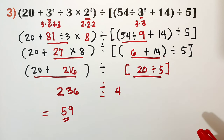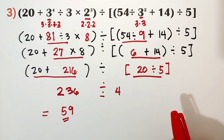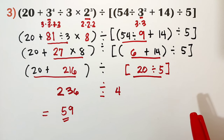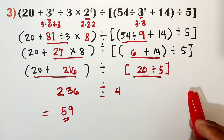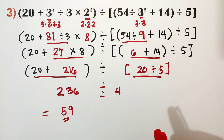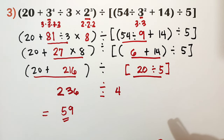I hope you learned the order of operations — GEMDAS: G stands for group, E for exponent, M for multiply, D for divide, A for addition, and S for subtraction. Remember, multiplication and division are not always in that order — whichever comes first from left to right. For example, if division comes before multiplication, divide first. I hope you learned from this video; please subscribe to the channel and hit the notification bell to stay updated on new videos.